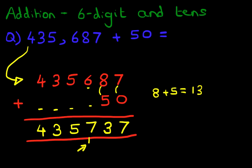And that is our answer. It is 435,737. And that is correct. That is how we do addition of 6 digit numbers and tens using the vertical format.